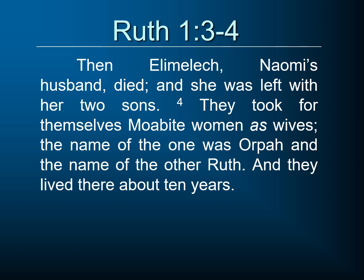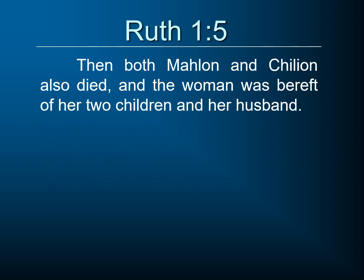Verse 3: over the process of time, Elimelech, Naomi's husband, died, and she was left with her two sons. Remember, they didn't have social security or welfare, so when a husband died that was tragic — but she still has her two sons to take care of her. And those two sons, verse 4, took for themselves Moabite women as wives. The name of one was Orpah, and the name of the other was Ruth. And they lived there about ten years. But then, verse 5, both Mahlon and Kilion also died, and the woman was bereft of her two children and her husband. Notice the story now is going to be told from the perspective of Naomi — she is the key character for this chapter.